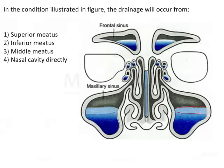The main function of the maxillary — or rather all sinuses — is to decrease the weight of the skull, and secondly, to resonate the air so that the voice production, that is speech produced from the larynx, is resonated and thrown out at a particular decibel.